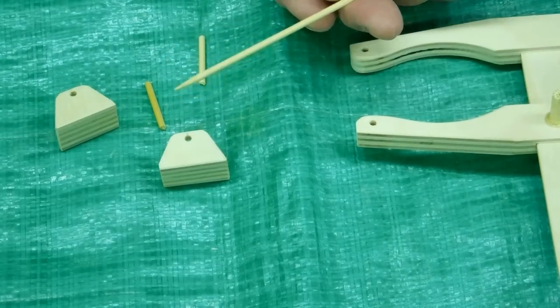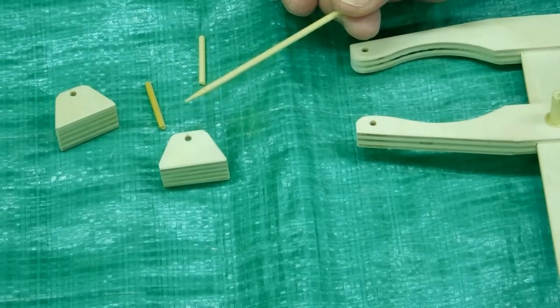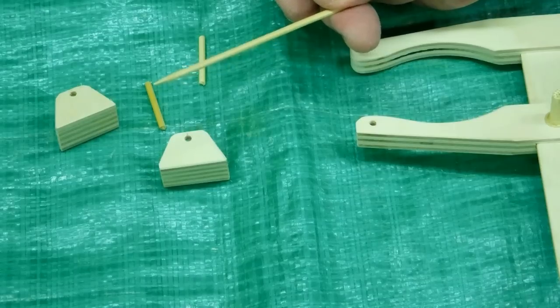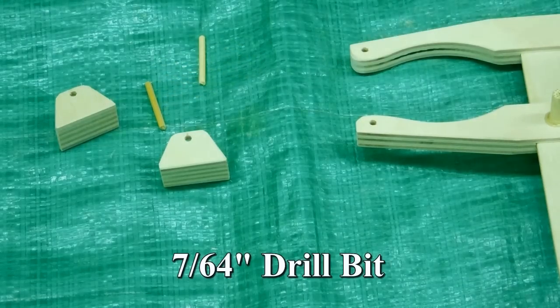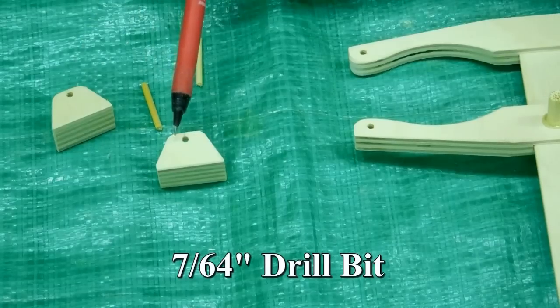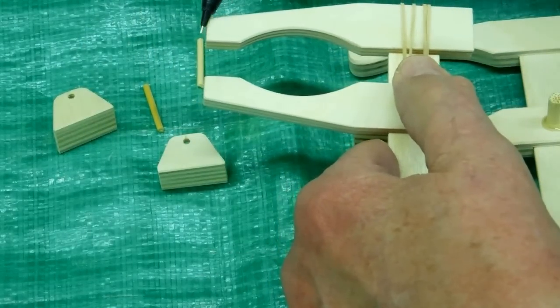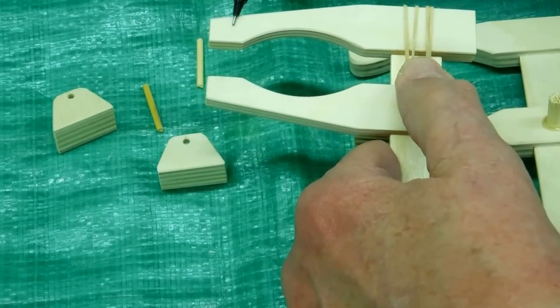In the center of this I came down 1⅛ of an inch. I'm using some small bamboo skewers, and these will fit very nicely in a 7/64ths inch hole. So I drilled a 7/64ths inch hole here.